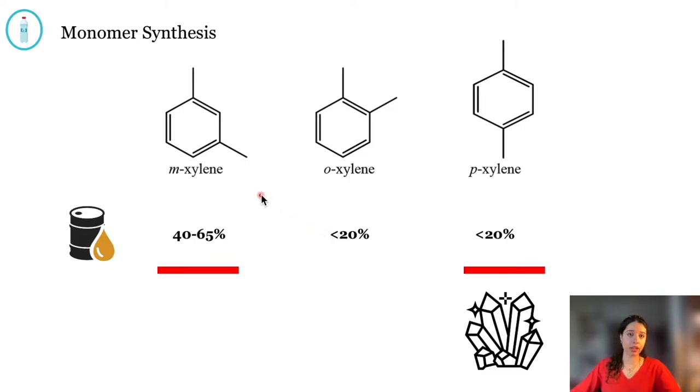Xylene itself has three different isomers due to the fact that it has two methyl groups that can be found in three different positions with respect to each other: meta, ortho, and para.